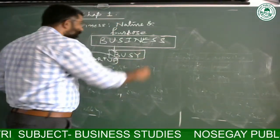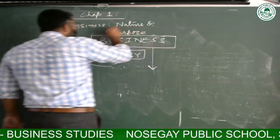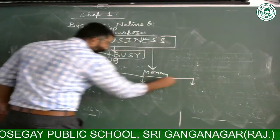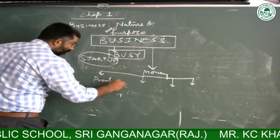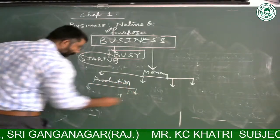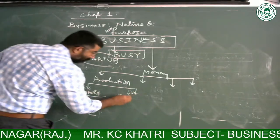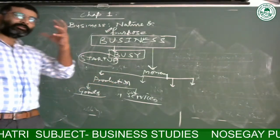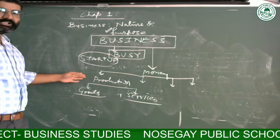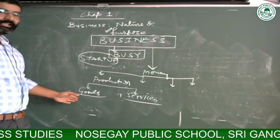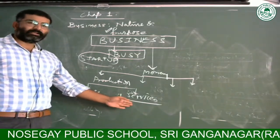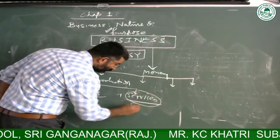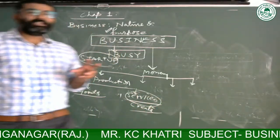Under business, the first purpose of doing business is to earn money. You can do business with the help of production — first, physical goods, or services. Business generally involves production. Production can be of physical materials or physical articles, and the second term is services. For goods, we use the word 'produce,' and for services, we use the word 'create.'